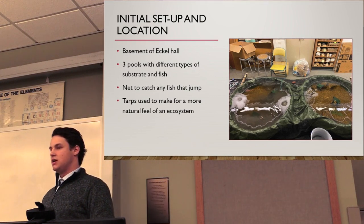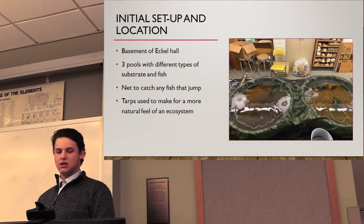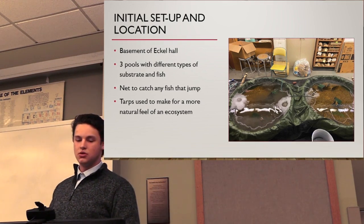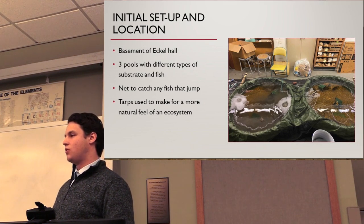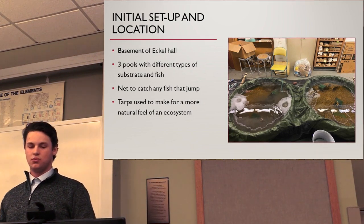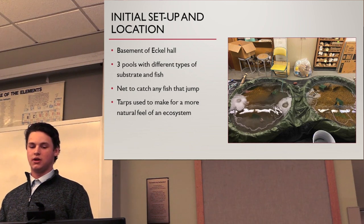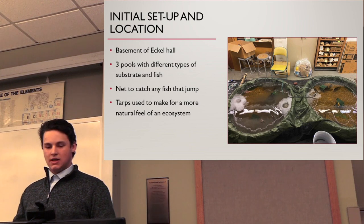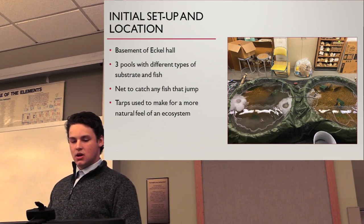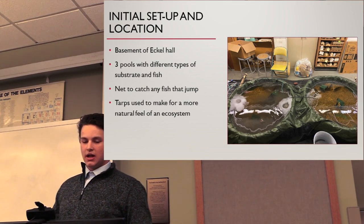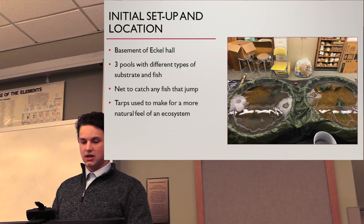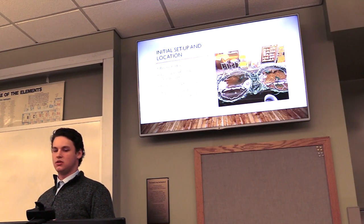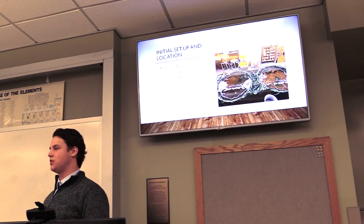I used a 12-foot seine net to make sure any fish that were skittish or scared didn't jump out and create any possible fatalities. Tarps were also used to give a more natural feel for the fish, because the kiddie pools were blue underneath, and I felt a darker green coloring would make them a little less stressed. My tanks were set up with two garden pots, two air stones, and sand and algae turbidity. I didn't use a filter because I didn't want the suspended material I wanted to keep in the water to get filtered out.